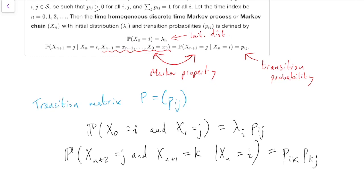We get p, k, j. So that's p, i, k times p, k, j. In the next subsection, we'll see a bigger example of a Markov chain. We'll see you next time. Thank you.